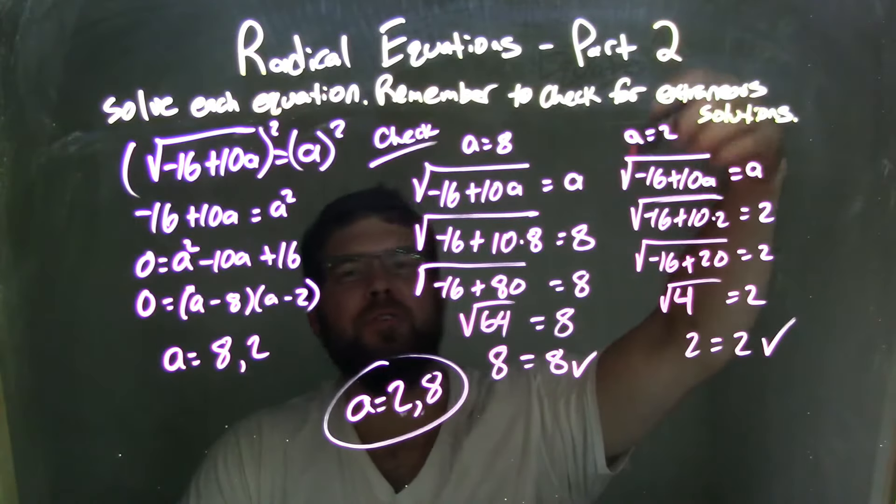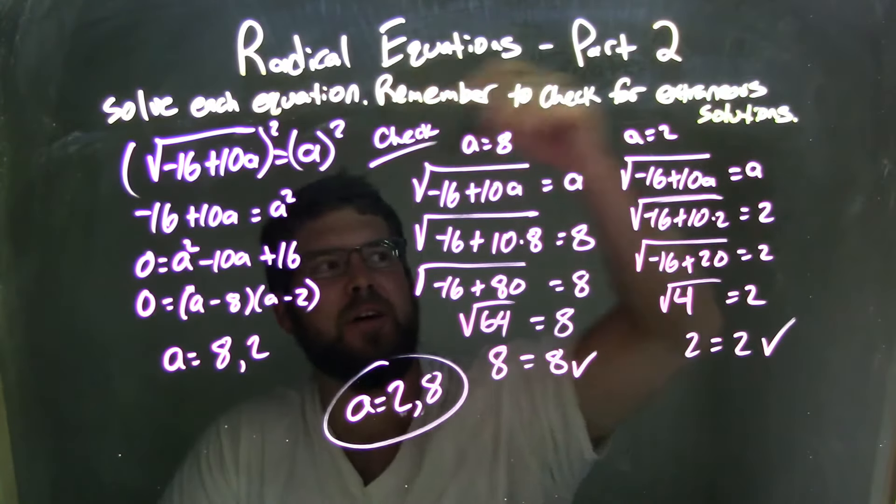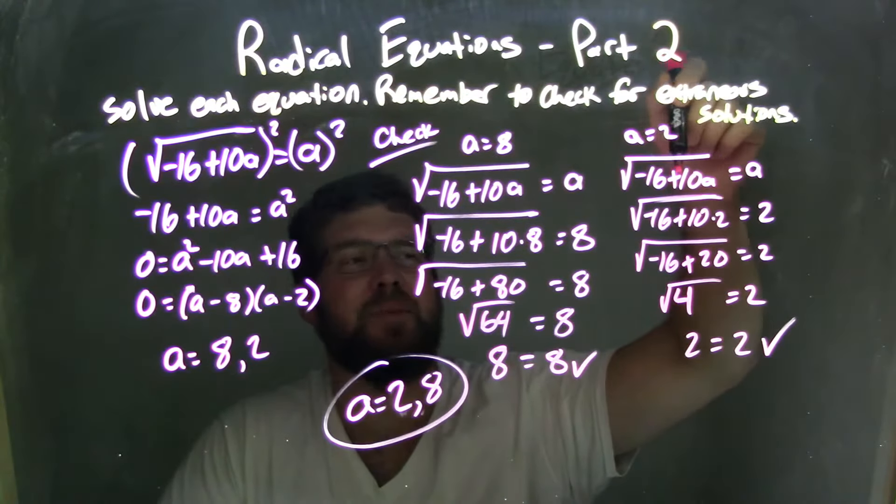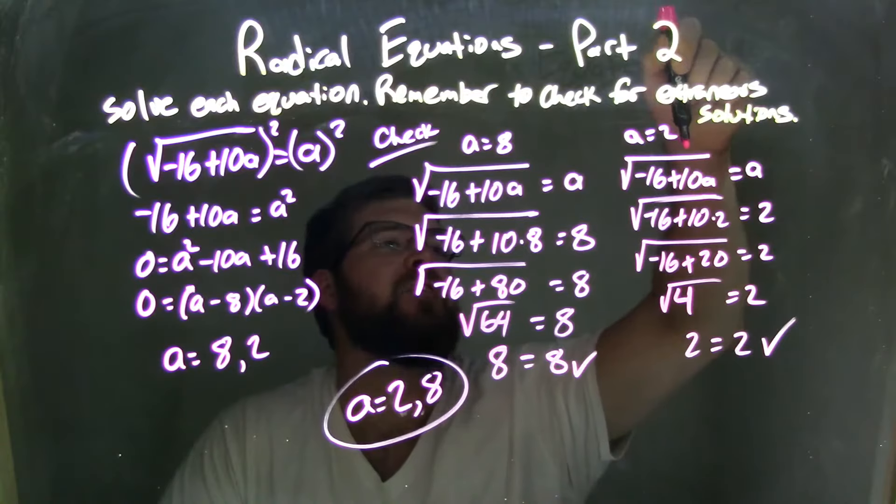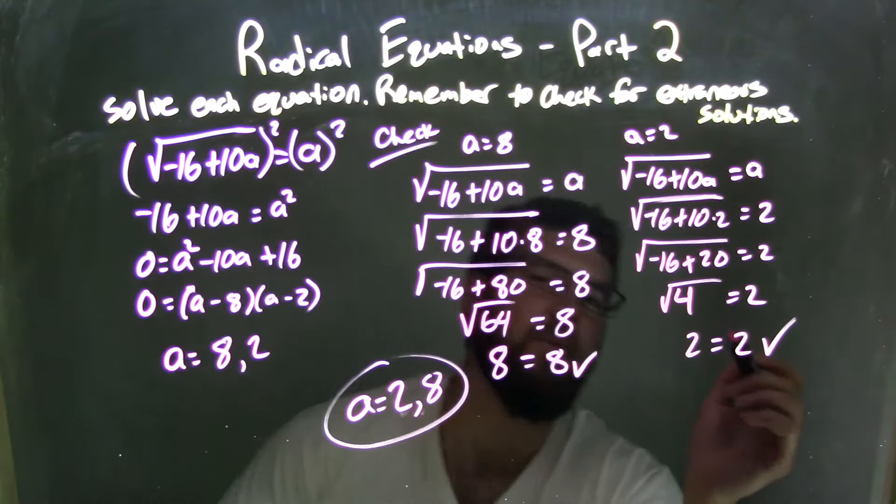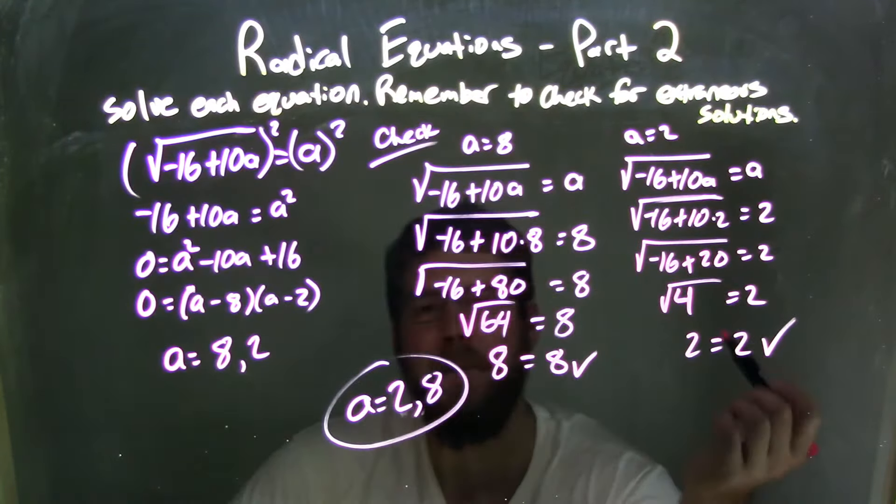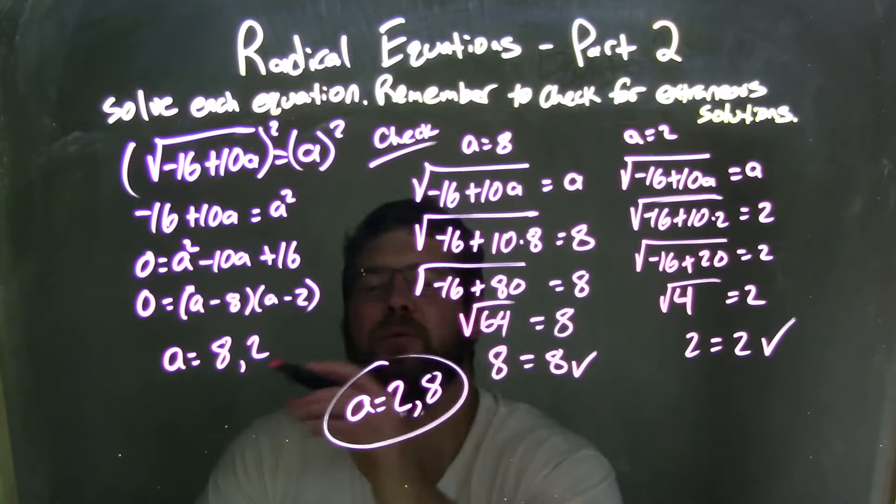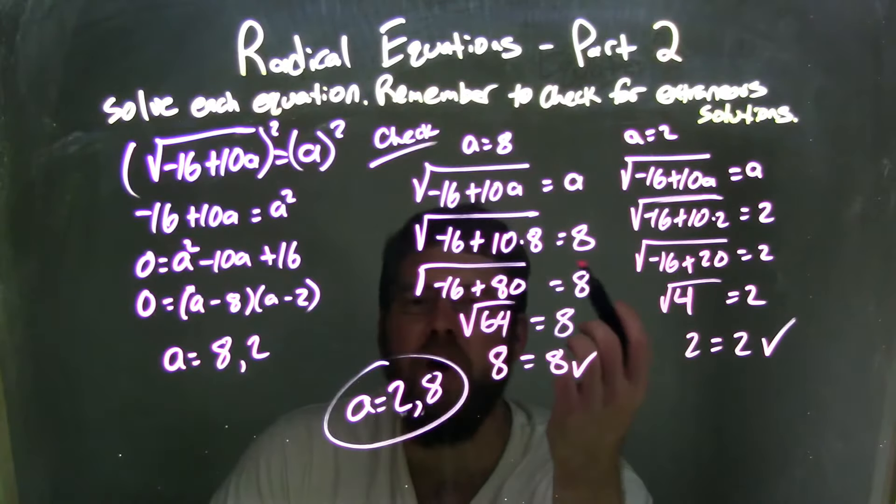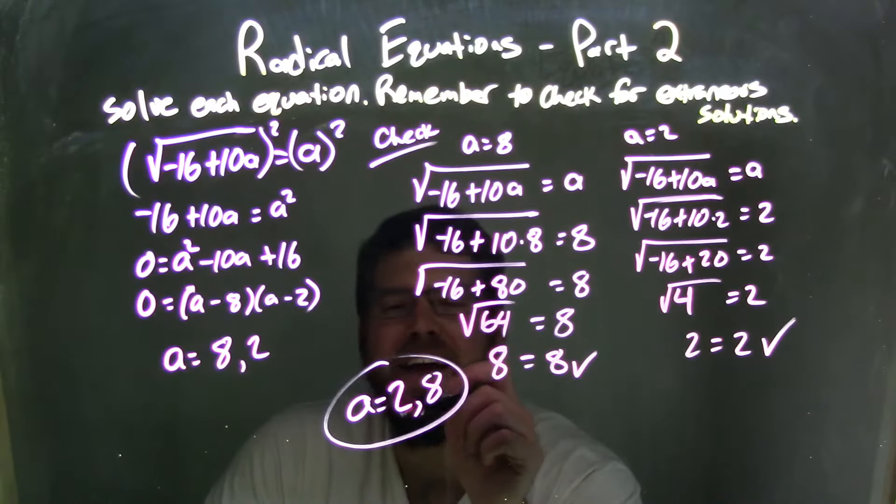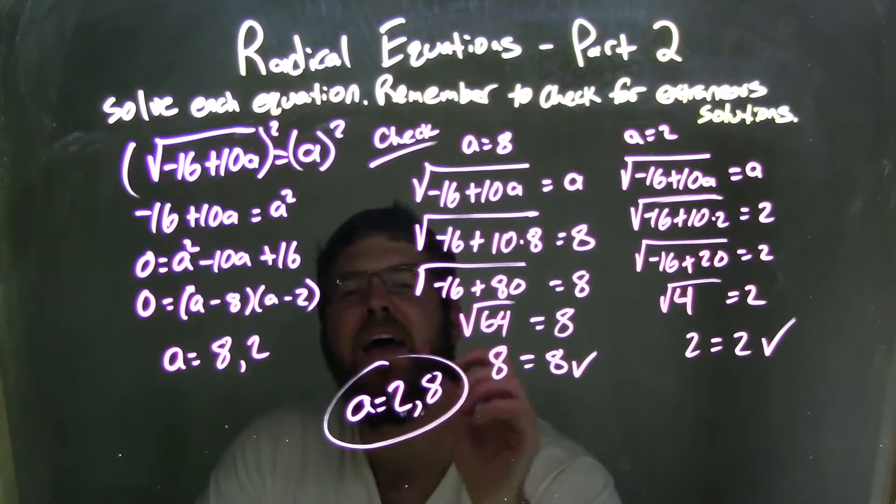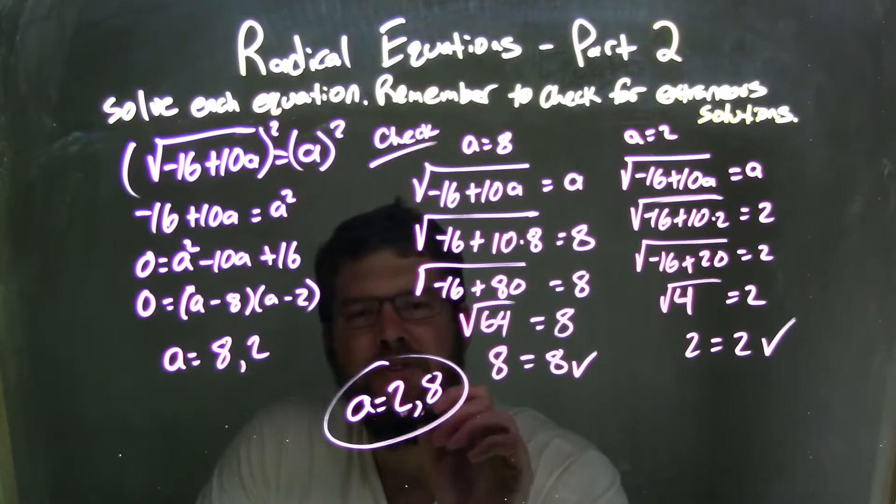Let's try the other one. a equals 2 and plugged it back into our original equation. Be careful not to do the squared one. That's the original equation—the square root of negative 16 plus 10a equals a. Simplified it, kept everything on their own side there. As we simplified it, we got 2 on the left, 2 on the right. Both were equal to each other, meaning a equals 2 is a true solution. None were extraneous here. So I rewrote it this time from least to greatest. And so my two answers, not extraneous solutions—they're real answers here—are a equals 2 and 8.